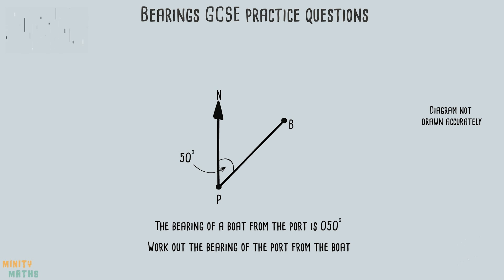Now we have a diagram which represents the information we are given in the question. The question asks for the bearing of the port from the boat so we draw a north line from the boat. We could use the allied angle rule as we did with the previous question but let's look at a different rule for calculating this one.